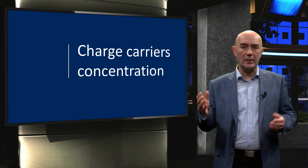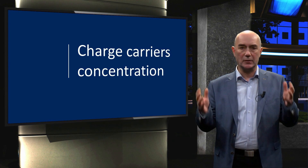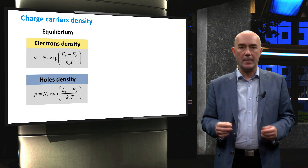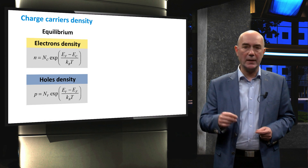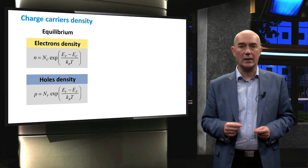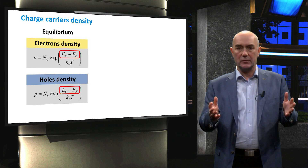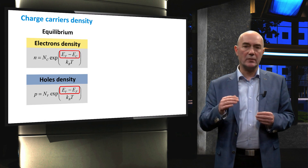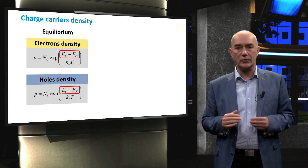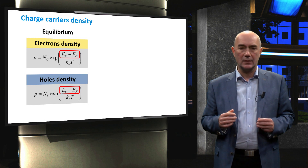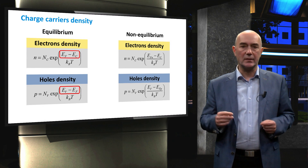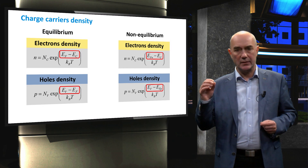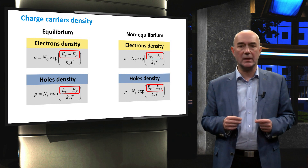Let's determine the carrier concentrations in illuminated semiconductors. For a system in equilibrium, we determine the carrier densities occupying states in the conduction and valence bands as a function of the Fermi level position with respect to the band edges. The same approach can be used in a non-equilibrium situation, with the difference that we now have to consider two quasi-Fermi energy levels.